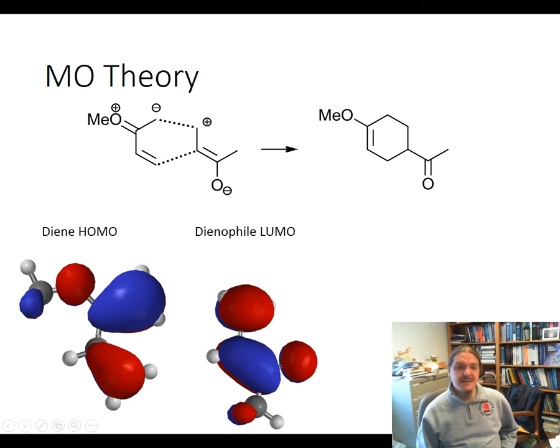And then here is the LUMO of the dienophile. And it's a little bit trickier to see, but the dienophile carbons are lined up where they are supposed to be. But because of the other, the carbonyl group, you also see an additional pi bond there and even a little bit of contribution from the methyl group on the ketone.